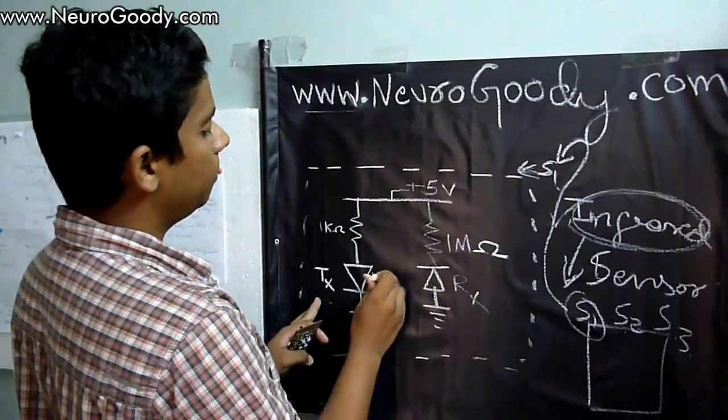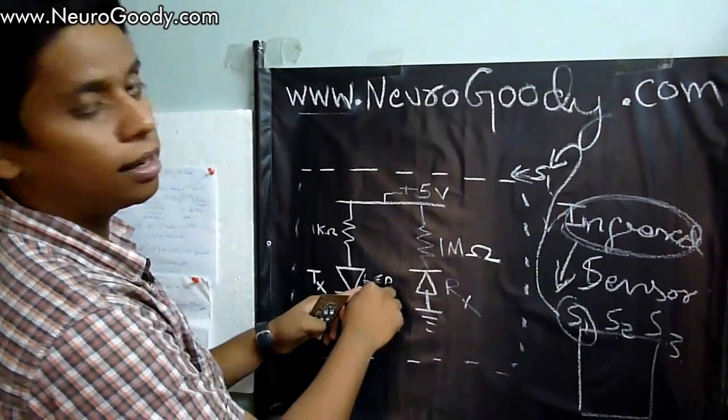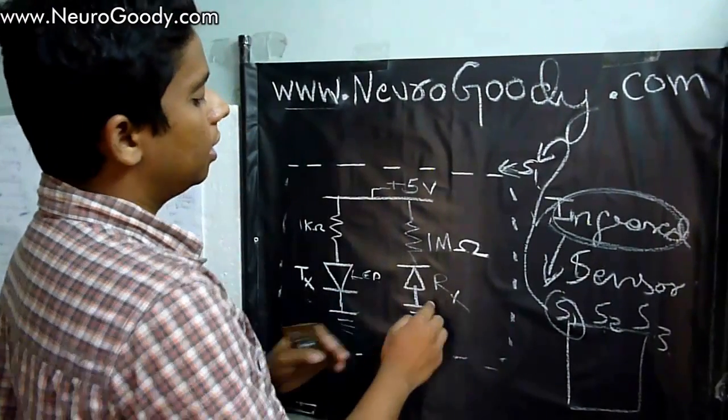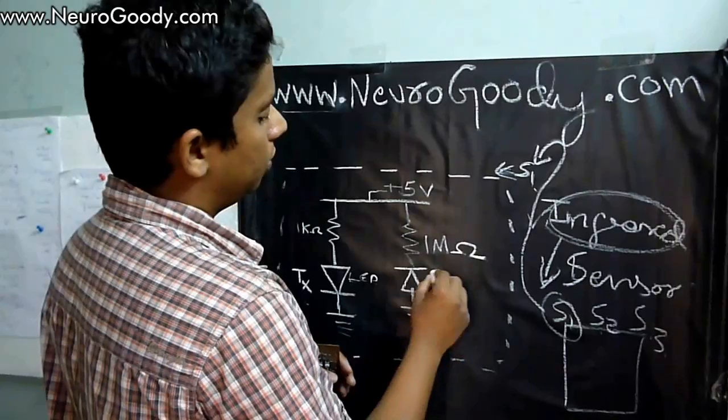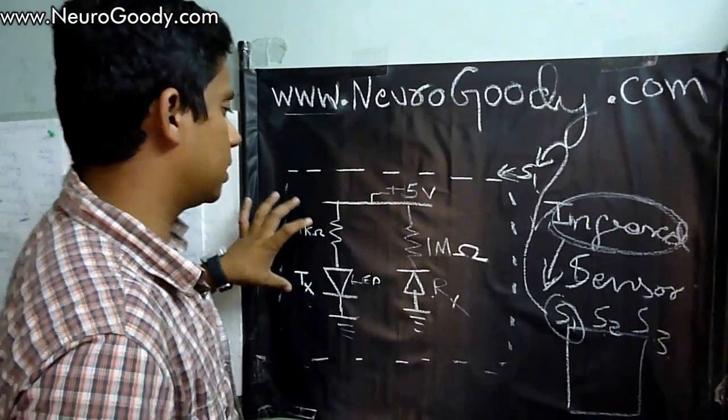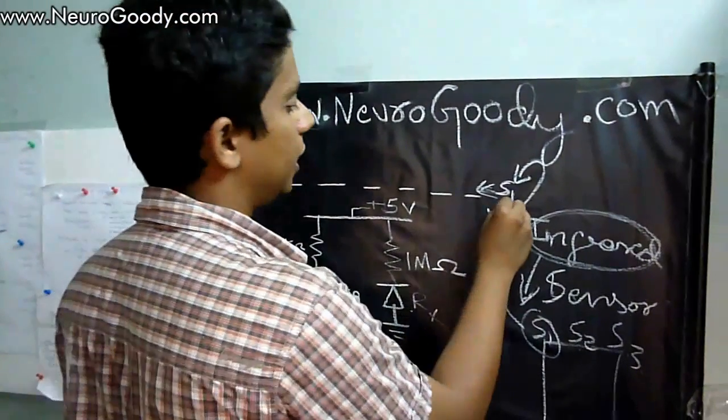The first part is the infrared transmitter. This is nothing but an LED, a light emitting diode. In this case, it is an infrared light emitting diode which emits infrared light. This is the receiver RX, an infrared receiver diode.